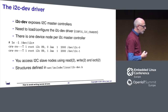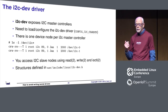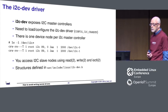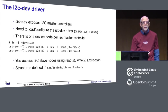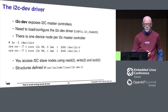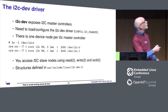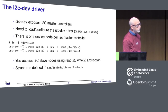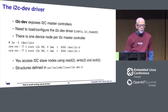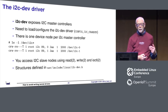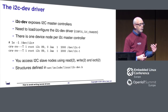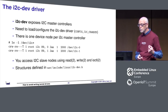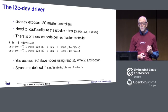To access I2C from user space, enable the i2c-dev driver in the kernel. It exposes a device node in /dev for each master bus controller — for example /dev/i2c-0 and /dev/i2c-1. You can access them using open, close, read, and write, but most of the time you use IOCTL functions to initiate I2C transactions. The structures you need are defined in the i2c-dev.h header file.